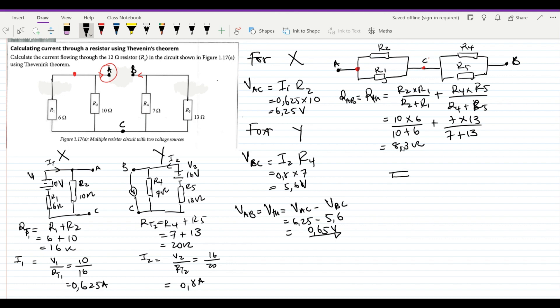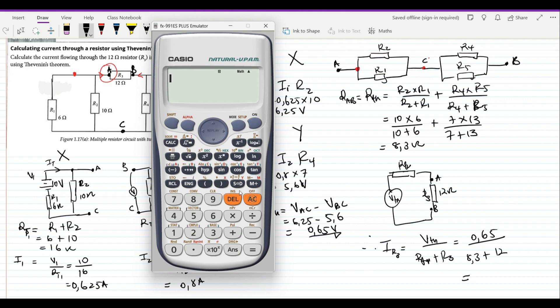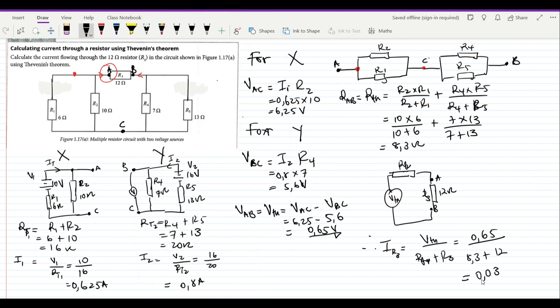And then the last step is to draw your Thevenin equivalent circuit diagram as always, where you have Rth there and Vth with our points A and B. We bring in our load resistor which was initially R3, and R3 has the value of 12. Therefore, our Ir3 will be equal to Vth over Rth plus R3. What is our Vth? 0.65. What is our Rth? 8.3. What is our R3? 12. We punch in our calculators: 0.65 divided by 12 plus 8.3. That should give us 0.032 amps.